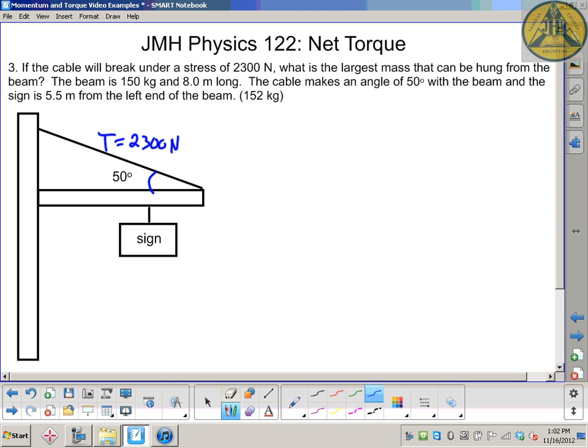First thing we do always, if we consider a net torque problem like this, is label where forces are. There's a force at the hinge, whatever's joining these two objects together, there's an upward component to that force. The middle of the beam has a force of gravity associated with it. The sign has a weight and pulls down, and the force of tension pulls up from the edge of the beam. Like similar problems, there's four forces. I'm going to label them F1, F2, F3, F4.